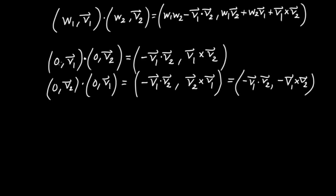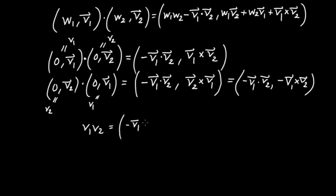Now what I'd like to do is go back to this quaternion (0, V1), which I'll call just V1, and redefine the other quaternion as V2. So this left-hand side is V1 times V2 in the quaternion multiplication sense. So: V1 times V2 is equal to the negative dot product of the vectors V1 and V2 in the scalar part, and V1 cross V2 in the vector part.